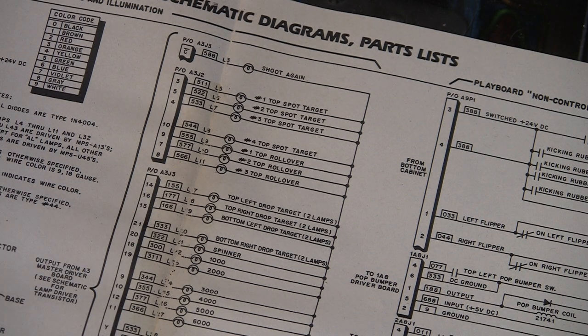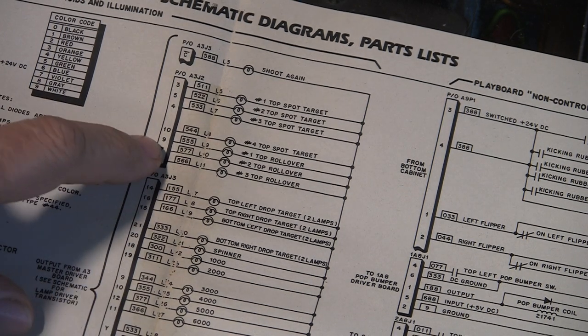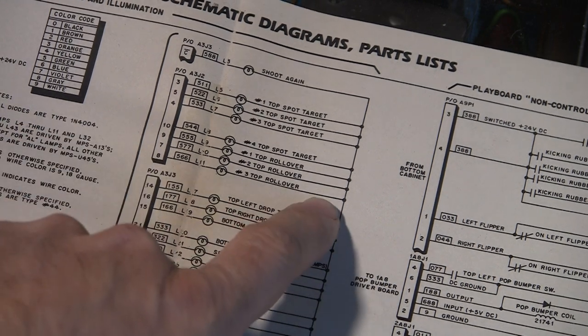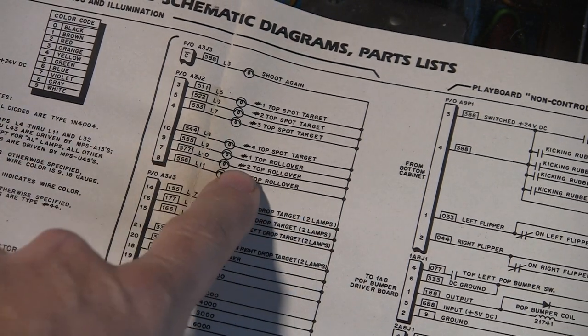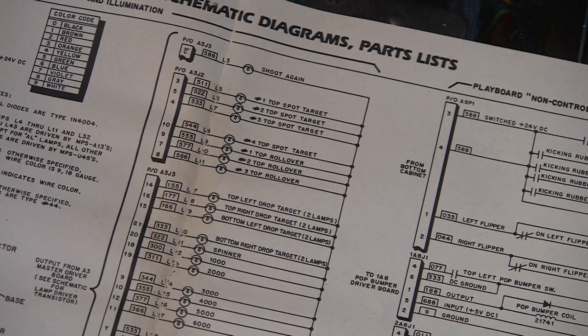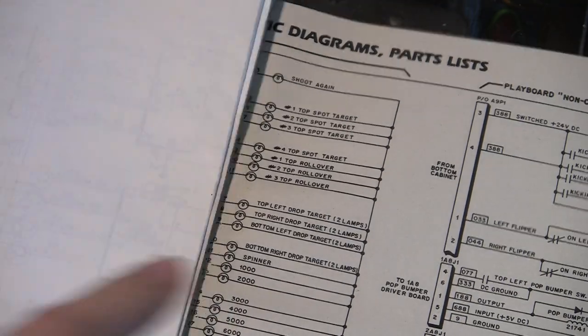And this tells us what pins they are. And this just gives us generally, so we know these are lights nine, ten, eleven. So now let's go into the schematics of the light driver board.